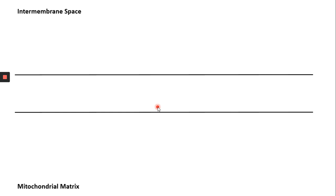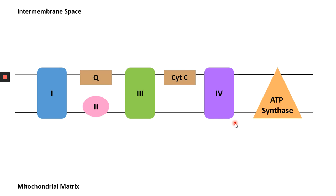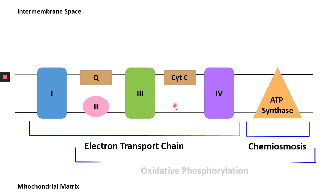The protein complexes 1 through 4, including Q and CYTC, form the electron transport chain — this is where electrons are transported from one complex to another. The ATP synthase, which is responsible for generating ATP, is part of chemiosmosis. Therefore, the combination of ETC together with chemiosmosis constitutes oxidative phosphorylation.